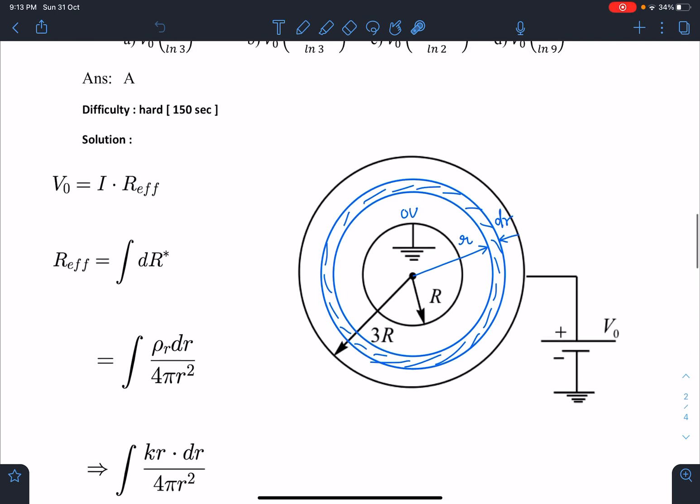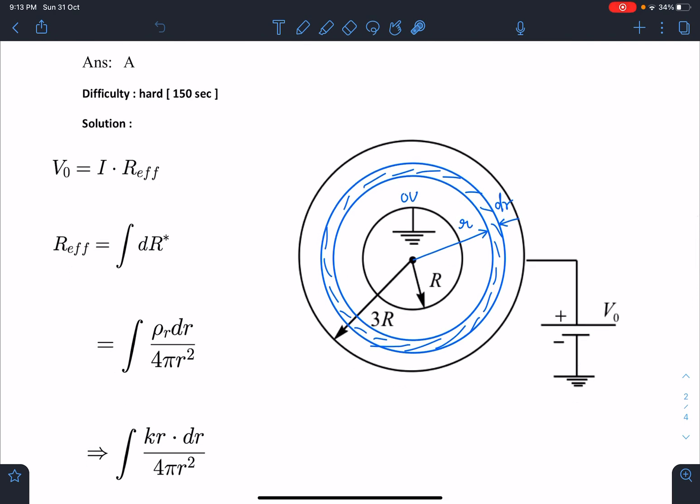Let's discuss this problem. Roughly two and a half minutes it should take, not more than that. Once we know that this is maintained at zero volt and this is maintained at V_0, you can see the current will be flowing radially inward from higher potential to lower potential. You can assume this shell is made of many differential shells, so one such shell I have taken here.